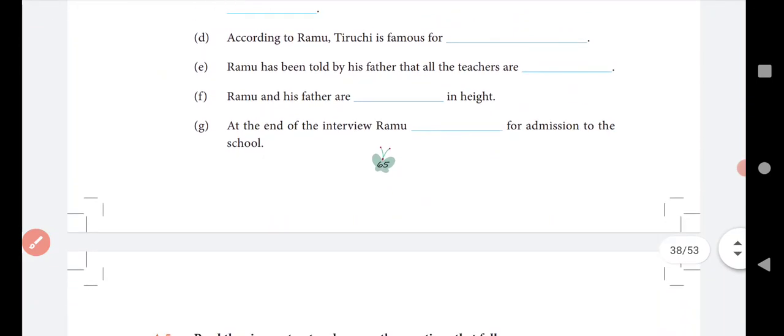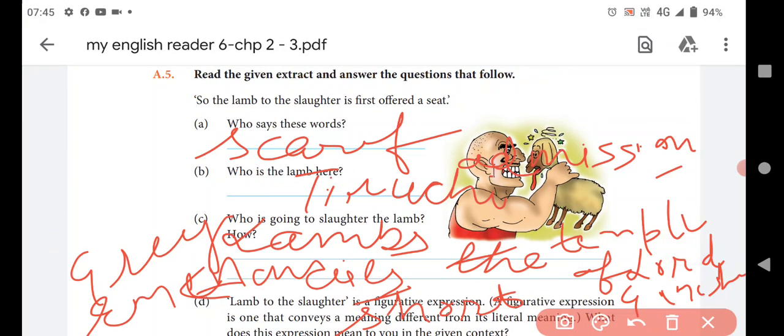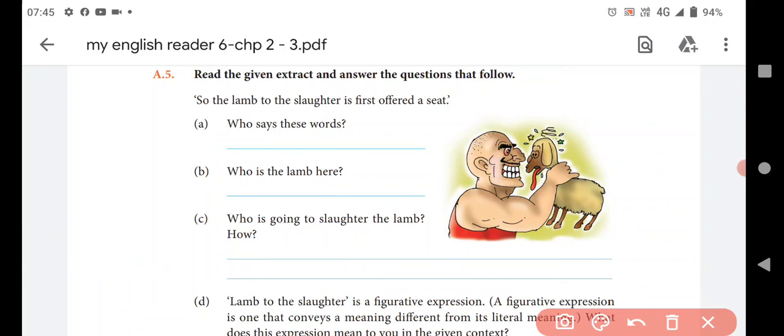Now, come to next. Read the given extract and answer the questions that follow. The lambs to the slaughter is first offered our seat. Who says this word? Ramu has said this word.